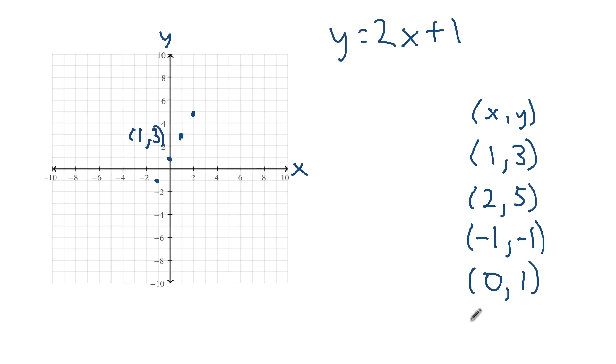Let's do one more point. Let's say x is negative 3. Well, when x is negative 3, 2 times negative 3 is negative 6, plus 1 is negative 5. So when x is negative 3, y is negative 5. So we start at the origin, go left 3, and then down 5. Right here.